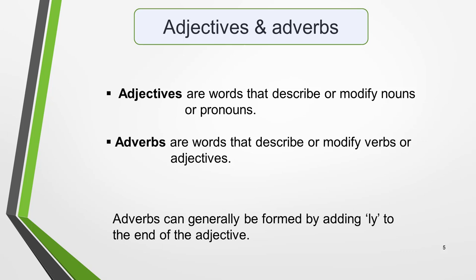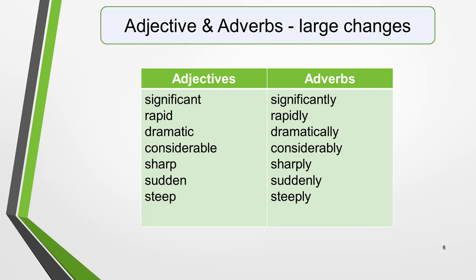In your task 1 essay you're required to describe what you see in a chart, graph, table, map or diagram — most especially to record changes in the data. To do this you will use describing words, that is adjectives and adverbs. Adjectives describe or modify nouns or pronouns, while adverbs describe or modify verbs or adjectives. Adverbs can generally be formed by adding '-ly' to the end of the adjective. Here is a table of adjectives and adverbs to describe large changes: significant, rapid, dramatic, considerable, sharp, sudden, steep — and their adverb forms: significantly, rapidly, dramatically, considerably, sharply, suddenly, steeply. Don't try to learn them all; this is a short essay of minimum 150 words.